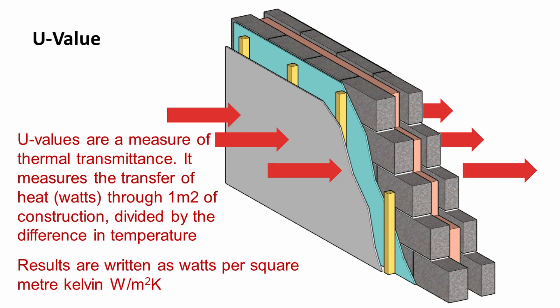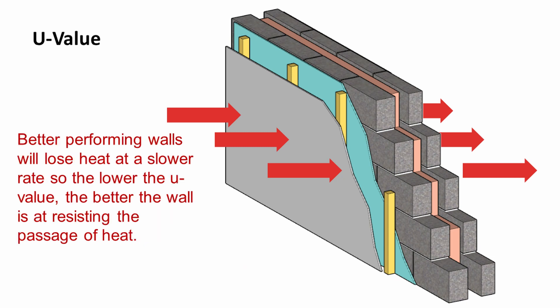A U-value is a measure of thermal transmittance. It measures the transfer of heat in watts through one metre squared of construction, divided by the difference in temperature. So we write the results as watts per metre squared kelvin. Better performing walls will lose heat at a slower rate, so the lower the U-value, the better the wall is at resisting the passage of heat.